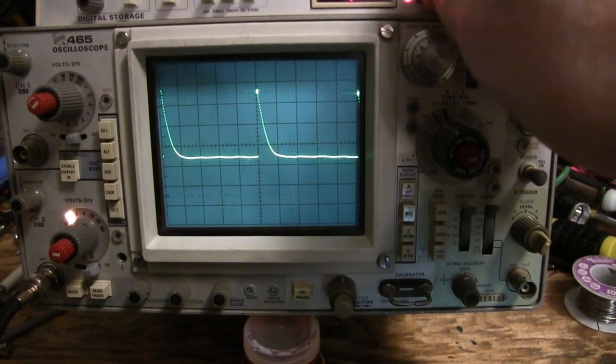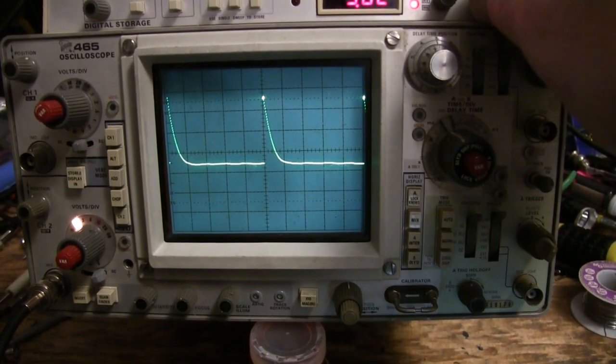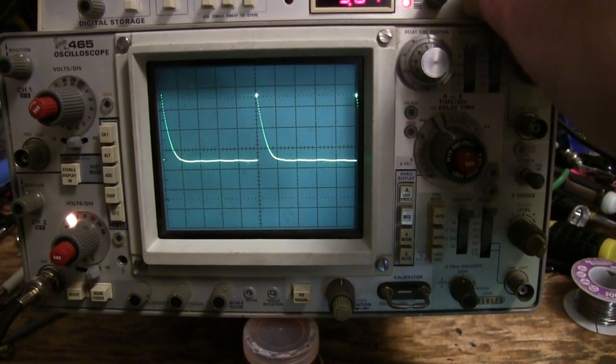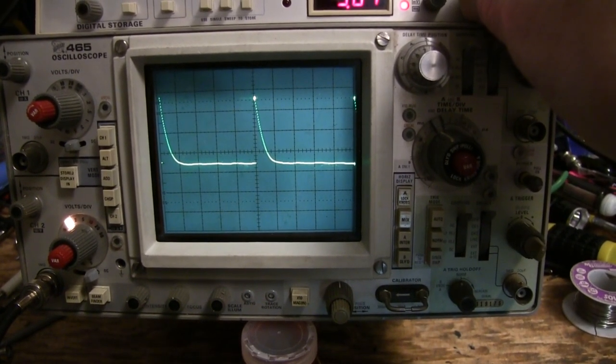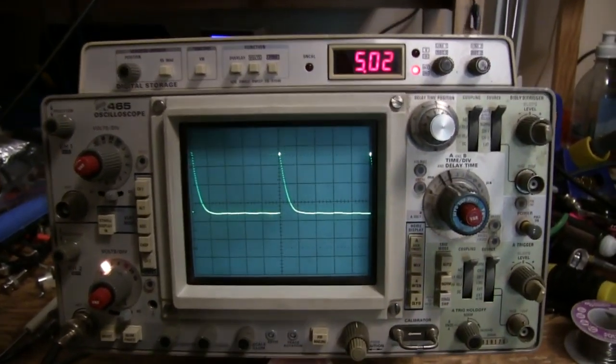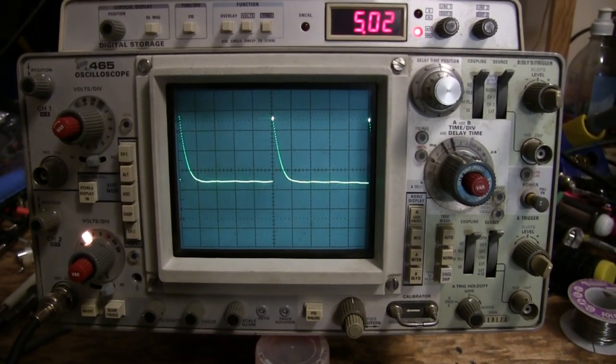It's not quite as accurate as a 468. If I were doing the same thing on a 468, it would say 500 exactly. But it's supposed to be, I think, the spec is about 3% for timing and voltage for the cursors for the 465 mod UC.